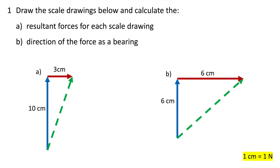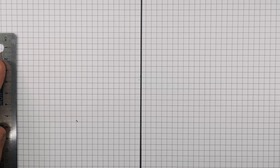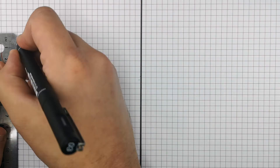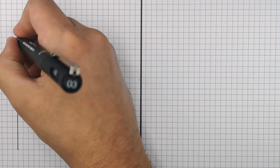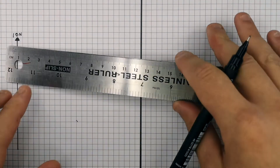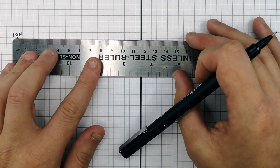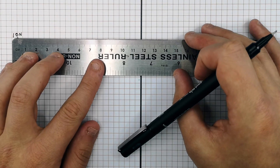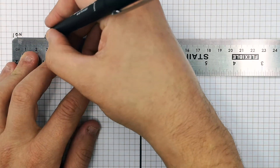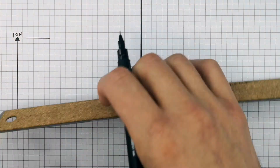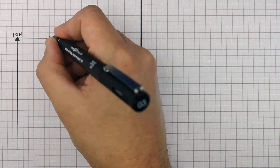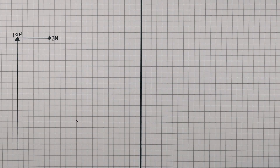This is the problem you will learn how to solve — press pause to attempt it; the method and answer will follow. The first force is 10 Newtons in a northerly direction, so we draw a 10 centimeter line. The other force is acting in an easterly direction, and because its magnitude is three Newtons, we draw a three centimeter line tip to tail.